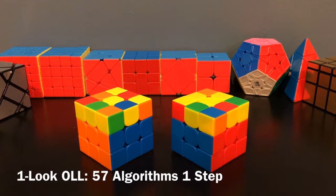For our advanced method, we'll be looking at 1-Look OLL. This is essentially the same as the last one, but instead of taking one step for edges and one step for corners, we'll be doing all of this in one step. However, this means that you're going to have to memorize 57 algorithms.